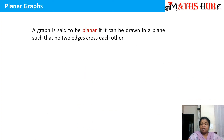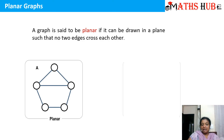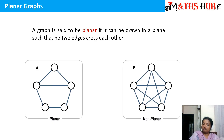Now let's talk about a planar graph. As the name suggests, a planar graph is a graph that can be drawn on a plain paper such that none of the two edges cross each other. So if I draw a planar graph, you can see that none of the edges are crossing each other, and hence it can be called a planar graph. Likewise, in graph B, many edges are crossing each other, so this is an example of a non-planar graph.